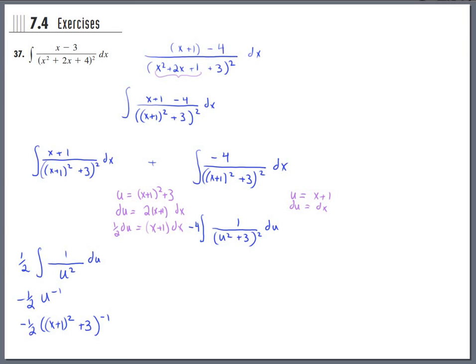On this one I tried just u equals x plus 1, and that makes du equal dx. Then when I rewrote the integral, it looked like u squared plus 3 quantity squared, still have the negative 4. Maybe I'll move that out front, negative 4, and then dx and du are exactly the same thing, so this becomes du.